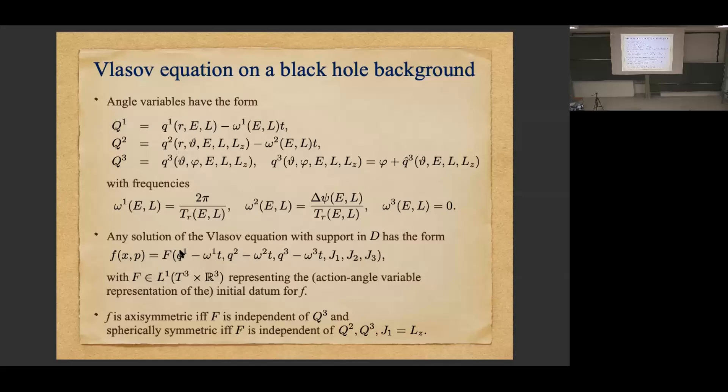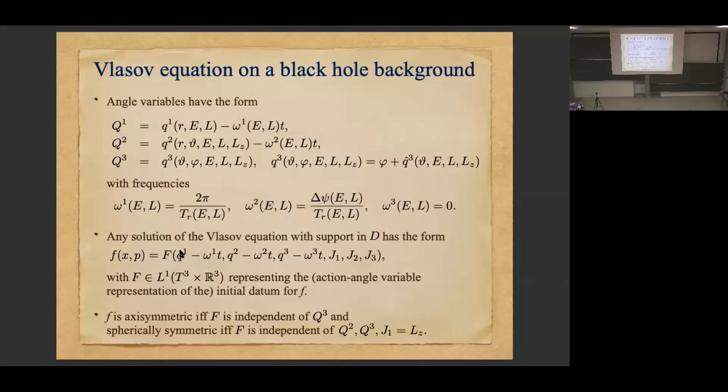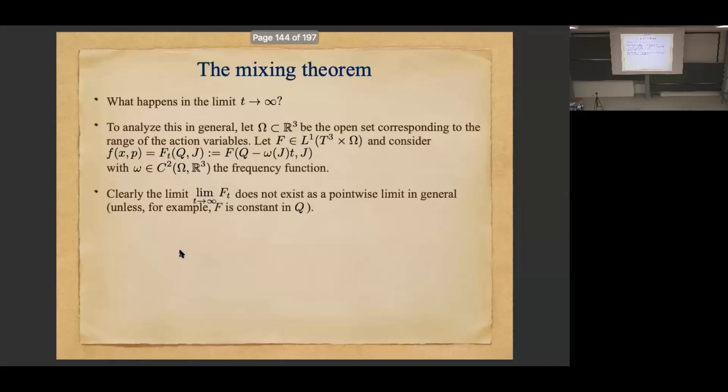Now we ask: what happens when T goes to infinity? Does this have a limit? If you just look at the formula, you'd say no, because it's oscillating — there's clearly no pointwise limit. Let me introduce more compact notation: ω is going to be the open subspace of ℝ³ where the action variables live. Rewriting in more compact form, Q has three components, J has three components, and ω(J) is assumed to be a C² function on ω — the frequency function depending on the action variables.